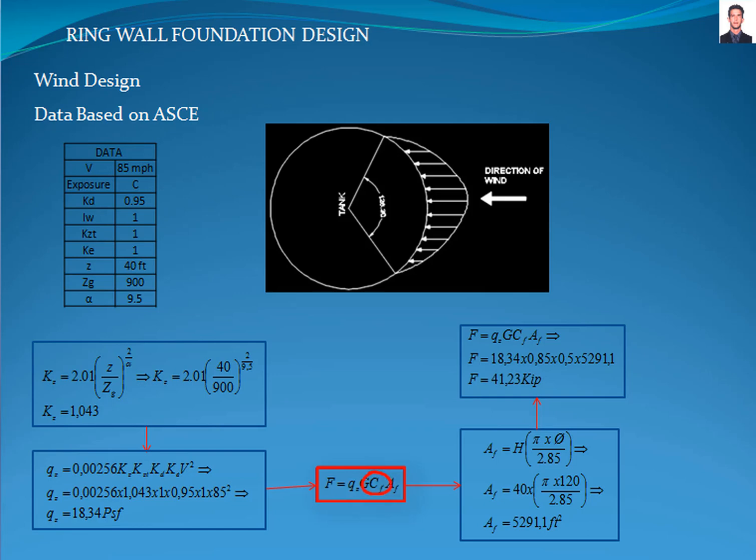CF is the force coefficient calculated with figure 29.4-1, with a value of 0.5. AF is the projected area, which is hard to define correctly. I assume it as 35% of the total wall area of the tank, giving a result of 5291.1 square feet.